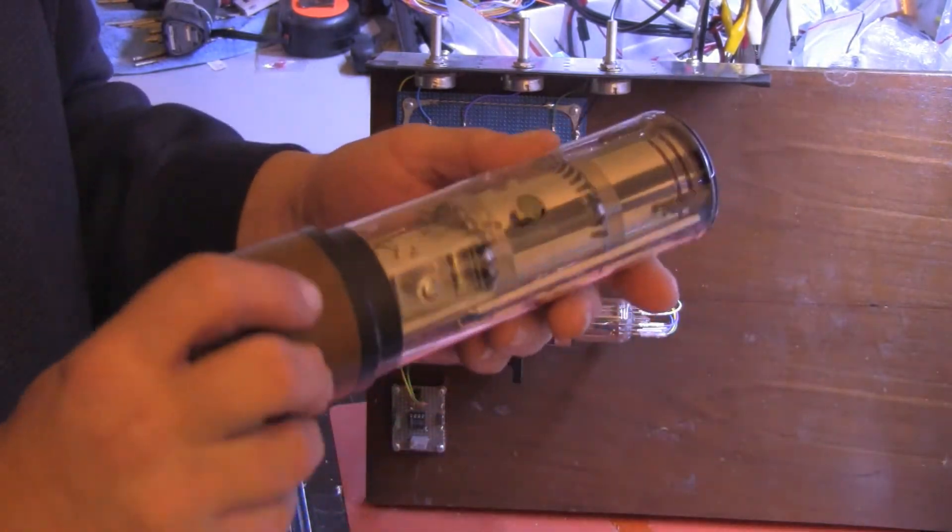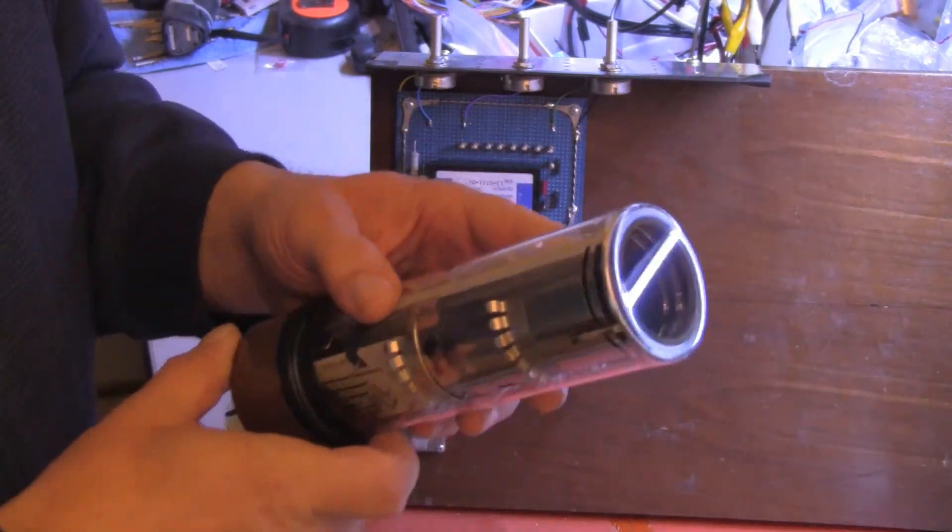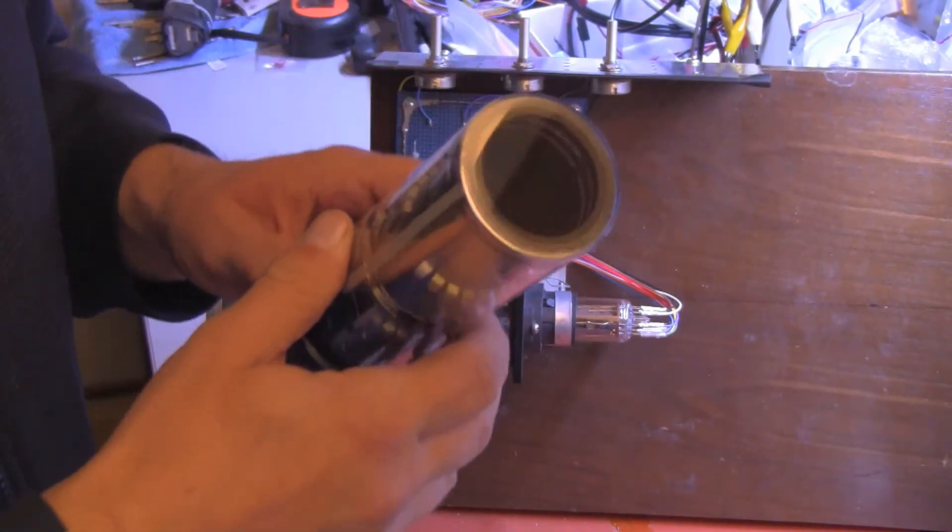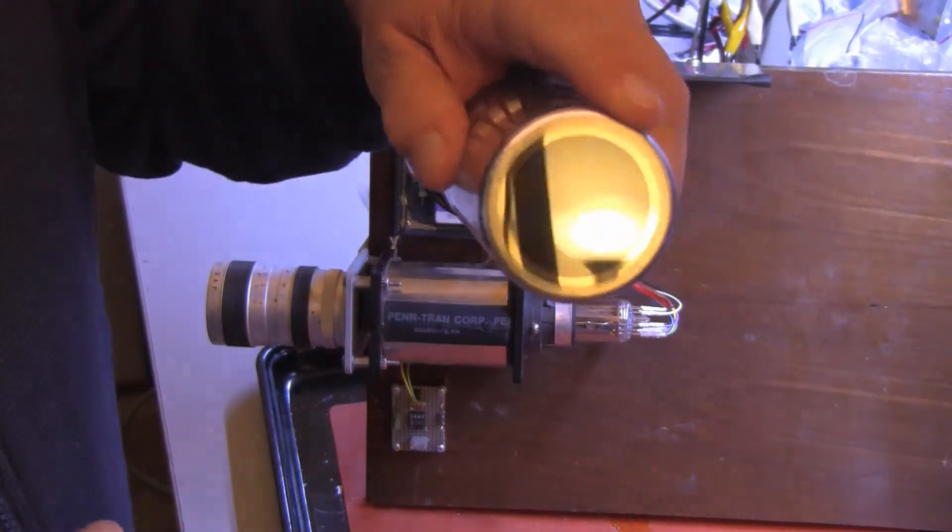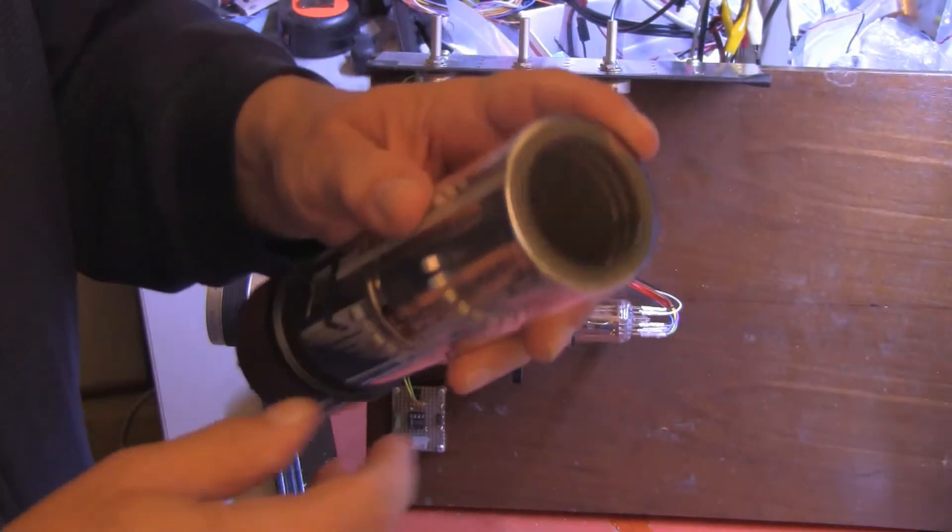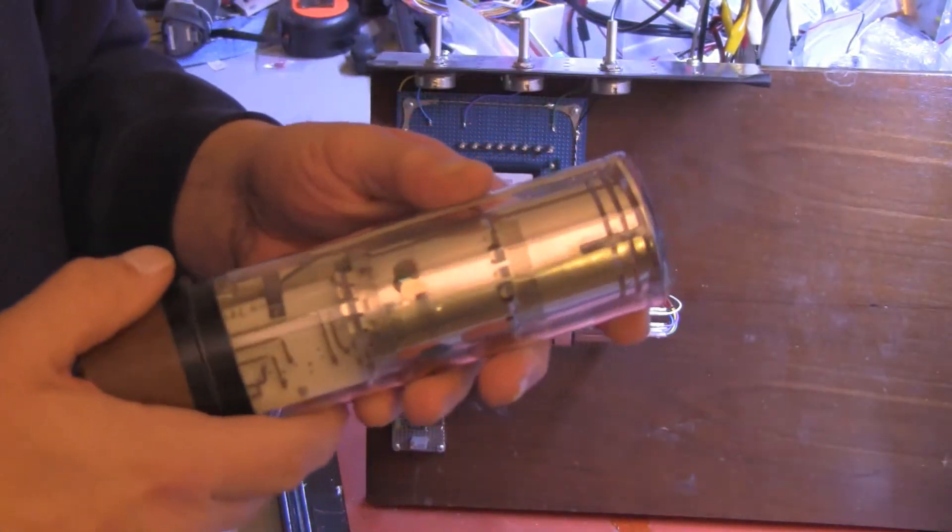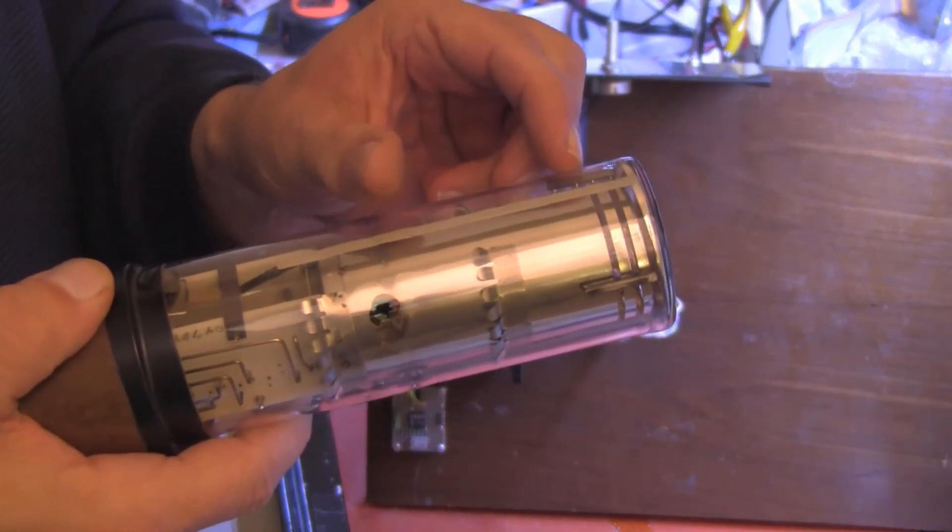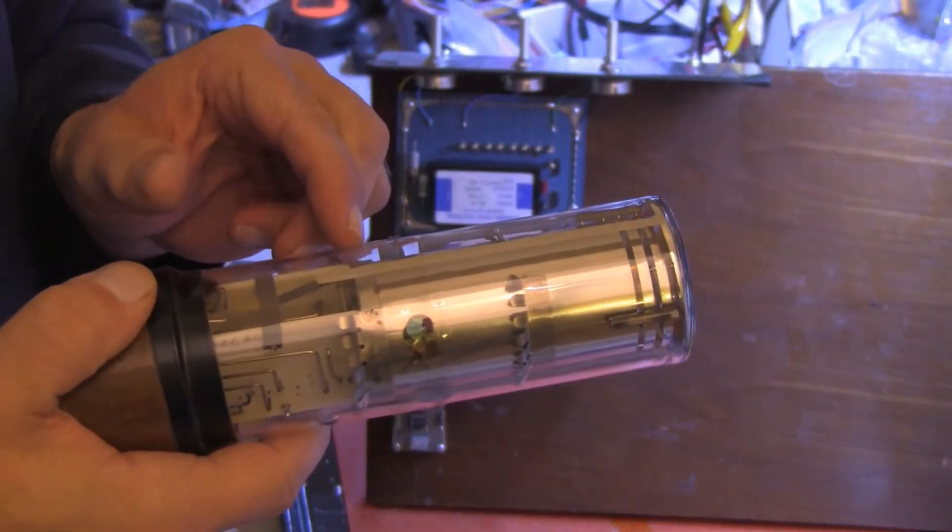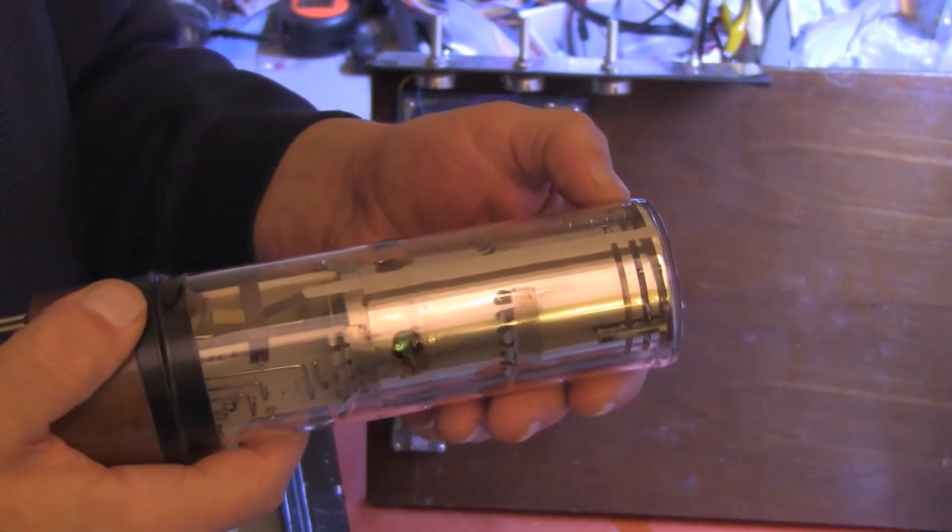This is an actual image-dissector tube of the Farnsworth variety. First, it has a photocathode, where an image would be focused. You notice immediately behind it is a series of rings, and then a cylinder, a long cylinder. These are accelerator rings.